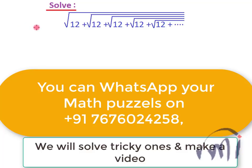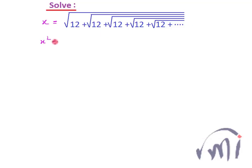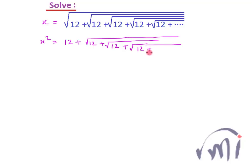Let me assume this is equal to x. So x is equal to square root of 12 plus square root of 12, and this continues for an infinite number of times. If I square both sides, x squared — the topmost square root sign will disappear — and it will become 12 plus square root of 12 plus square root of 12 plus square root of 12, and this will continue an infinite number of times.